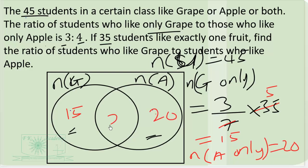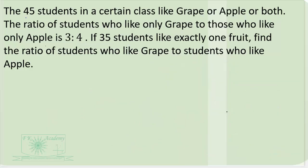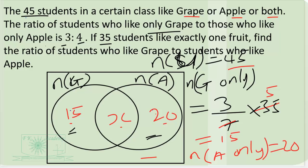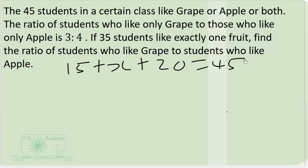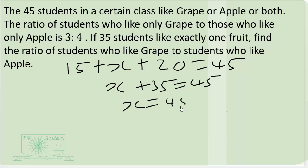We don't know those who like both yet, but we can find out. When we add 15, x, and 20 we should get 45, because outside the sets is 0 — since the students like grape or apple or both, there's no student who likes none of them. So 15 plus x plus 20 equals 45, giving x plus 35 equals 45, therefore x equals 10. Ten students like both.